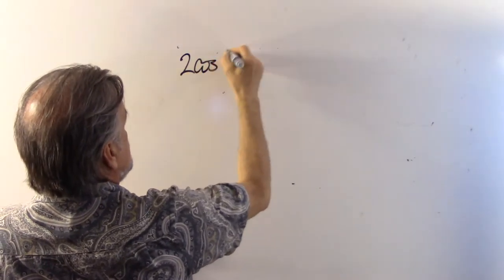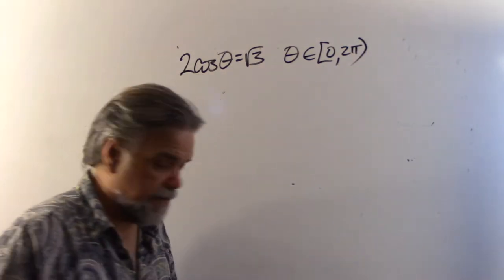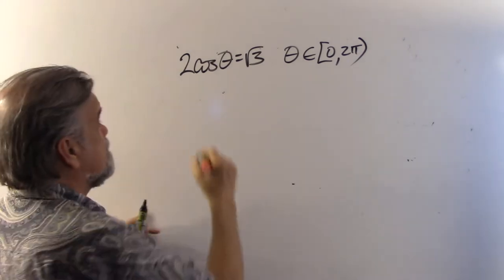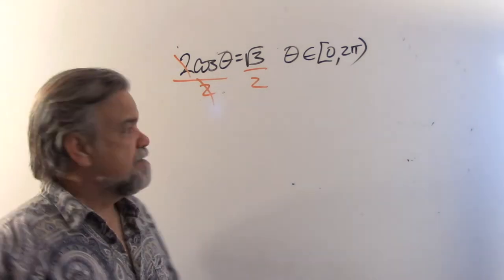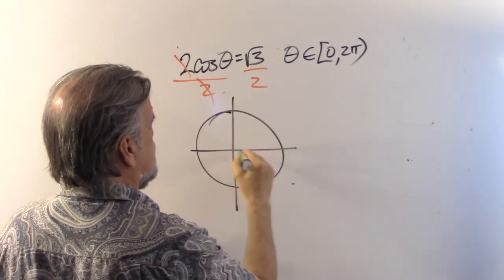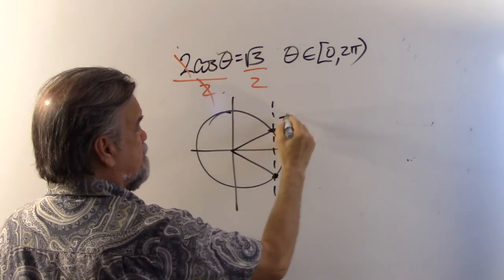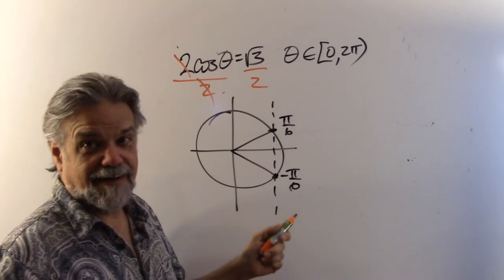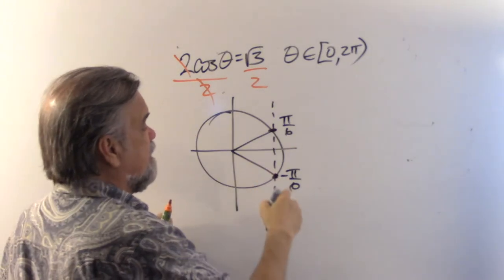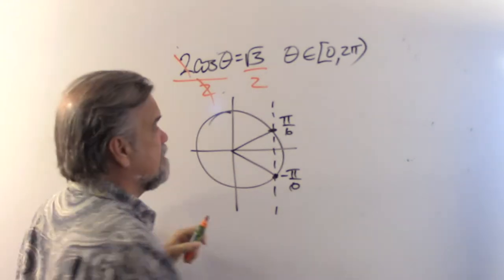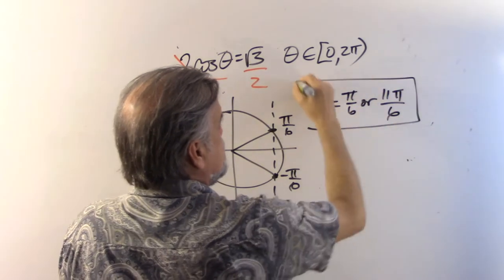Problem three: two times the cosine of theta equals root three, theta between zero and two pi. Divide both sides by two: cosine of theta equals root three over two. Cosine is the x-coordinate, so we look for angles with x-coordinate root three over two. That gives pi over six and negative pi over six. Since negative pi over six is outside the interval, we use its coterminal angle eleven pi over six. Answers: theta equals pi over six or eleven pi over six.